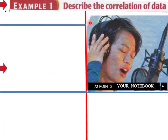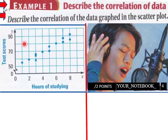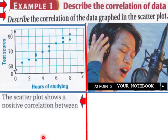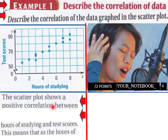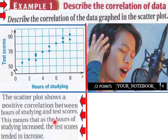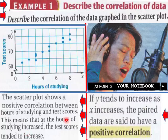Describe the correlation of data here. Describe the correlation of this data here of the graph of the data graphed in the scatter plot. Test scores and hours of study. Shows positive correlation between hours of study and the test scores. The test scores increased as hours of study went up. And then if y tends to increase as x increases, the paired data are said to have positive correlation. There's a pretty good definition right here of positive correlation.